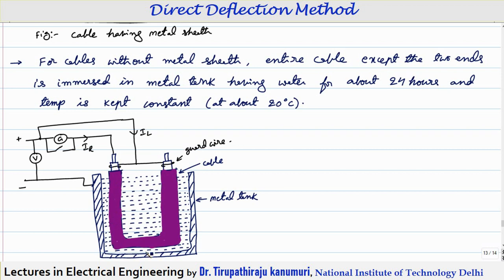The saline water is touching the insulation — this acts as the metallic sheath part shown before. The outer insulation at both ends is stripped and those stripped ends are connected together, acting as a guard wire. Whatever leakage current is there will directly pass through this guard wire.